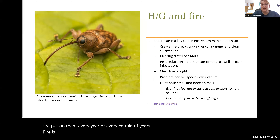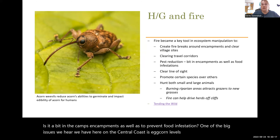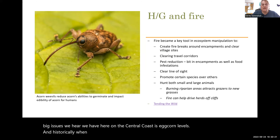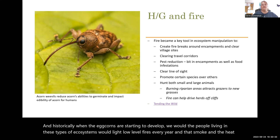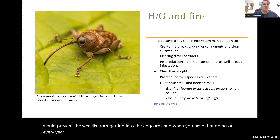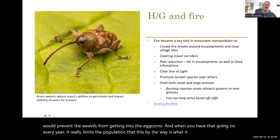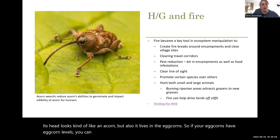Fire is also used for pest reduction in camps and encampments, as well as to prevent food infestation. One of the big issues on the Central Coast is acorn weevils. Historically, when the acorns were developing, people living in these ecosystems would light low-level fires every year, and the smoke and heat would prevent weevils from getting into the acorns. When you have that going on every year, it really limits the population. The acorn weevil's head looks kind of like an acorn, and it lives inside acorns — so if your acorns have weevils, you can't eat them. For places that have acorns, they are a very important source of food.